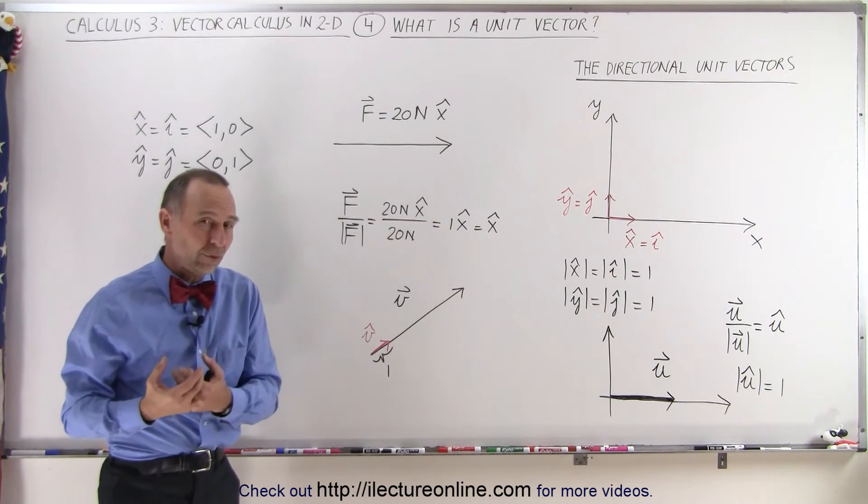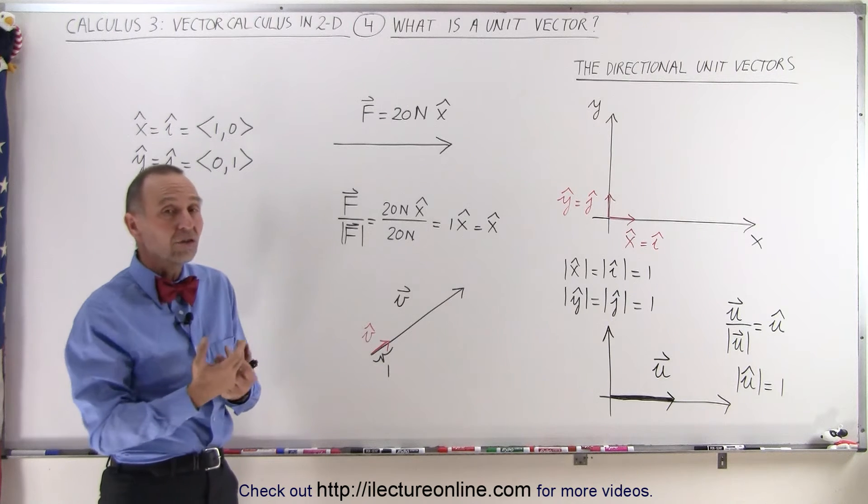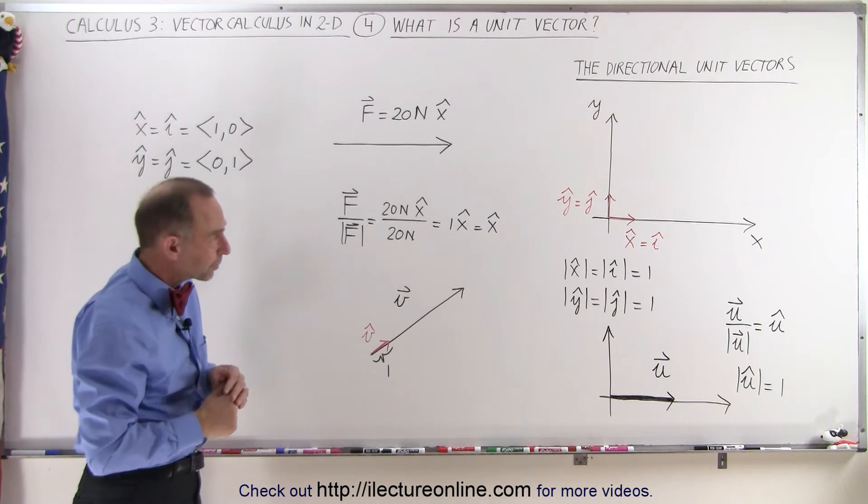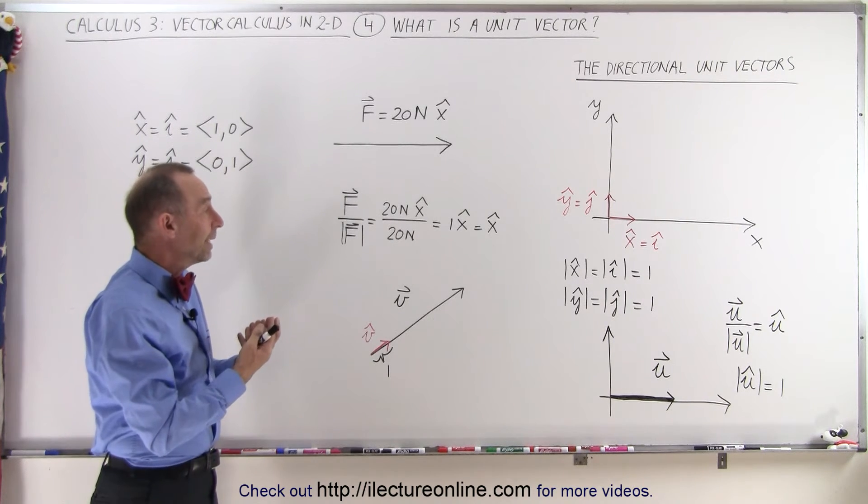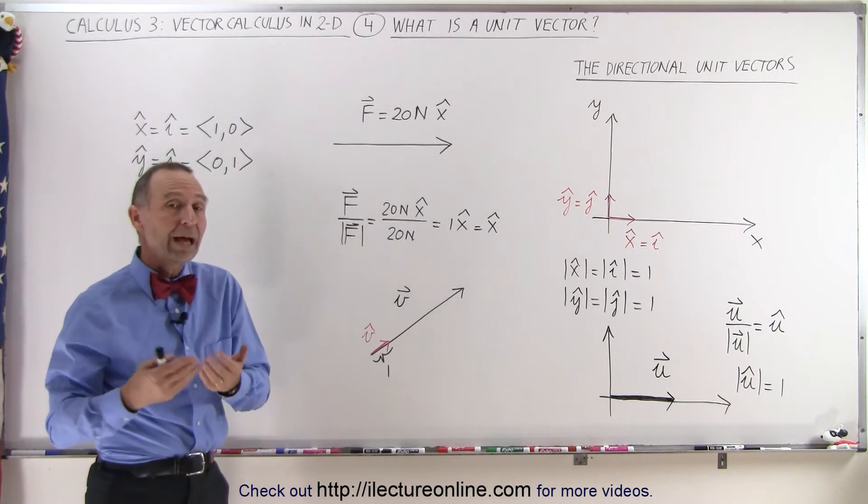So even though we had a vector that had newtons as its units, we had a certain direction, if we then take the unit vector in that same direction, the units actually, well, they're gone. They don't have a unit.